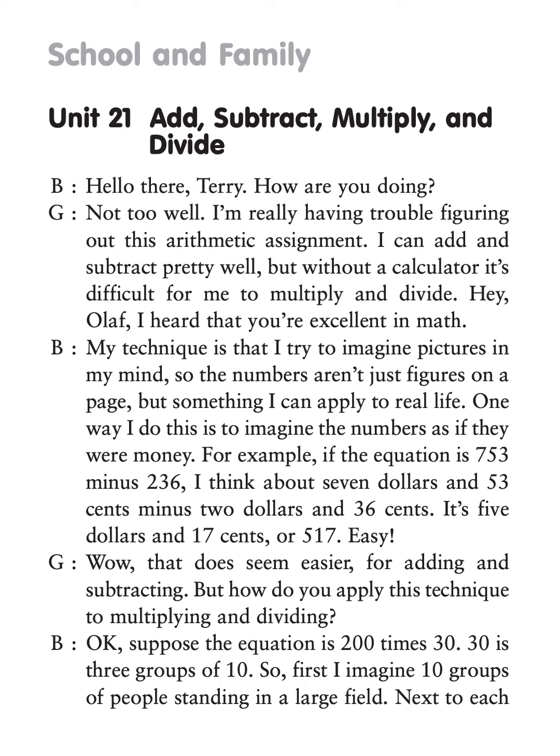But the problem requires 200 times 10 three times, so I just add two more fields of people to my picture with two more signs that say 2,000. Now I have 2,000 times 3. The answer is 6,000.